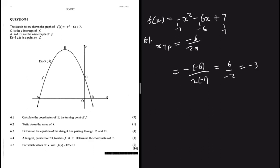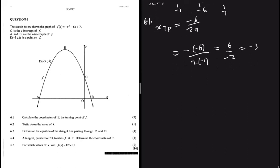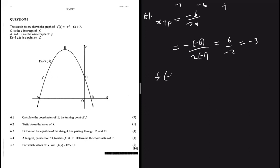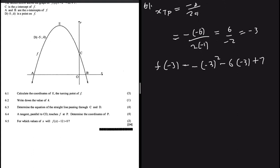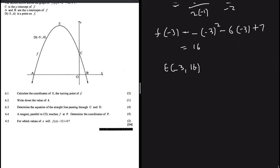x_tp = -(-6) / (2×(-1)) = 6/(-2) = -3. Then f(-3) = -(-3)² - 6(-3) + 7 = -9 + 18 + 7 = 16. So the turning point E has coordinates (-3, 16).